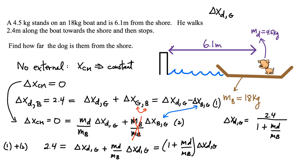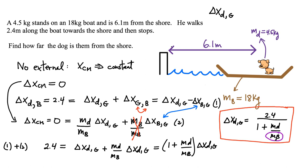Let's make sure this expression makes sense physically. If the boat were a cruise ship with a really large mass, as the dog walks 2.4 meters you'd expect the boat to basically not move. So the dog should be 2.4 meters closer to the shore. And that's exactly what you get — if the mass of the boat is very large, the second term in the denominator becomes insignificant, and the displacement approaches 2.4 meters.